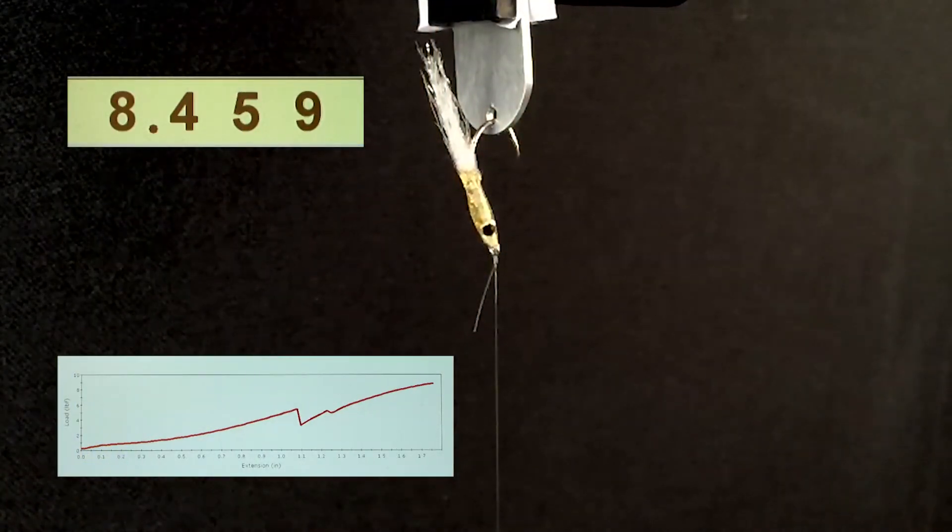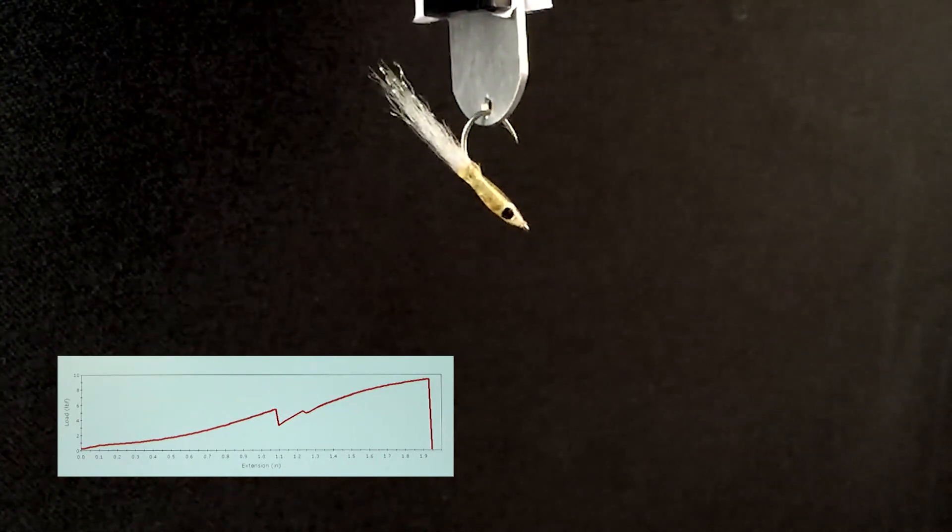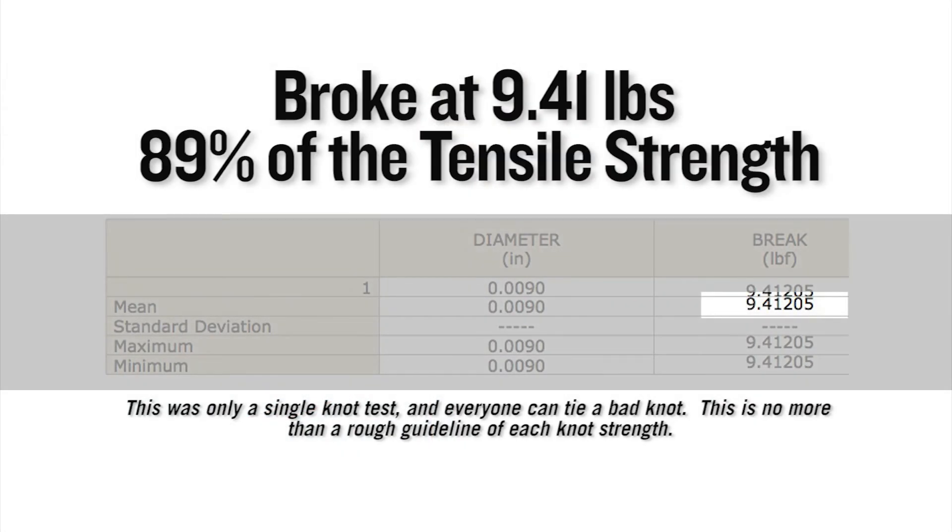On a single Instron test, this knot broke at 9.41 pounds, which equates to 89% of the tensile strength of the nylon it was tied in.